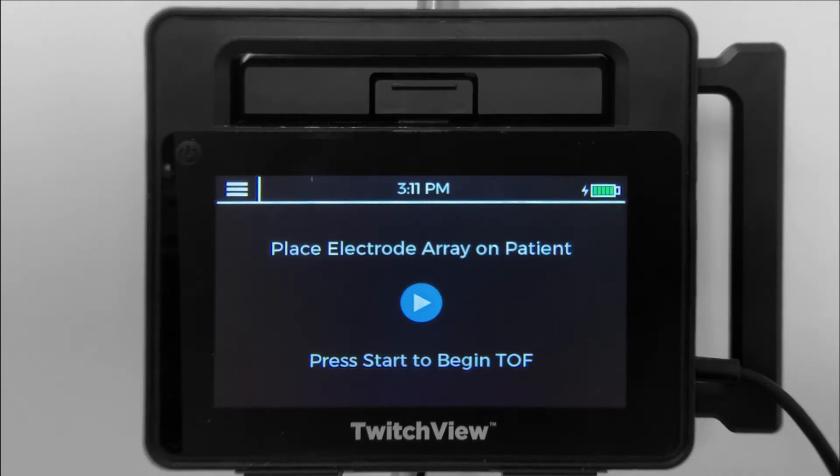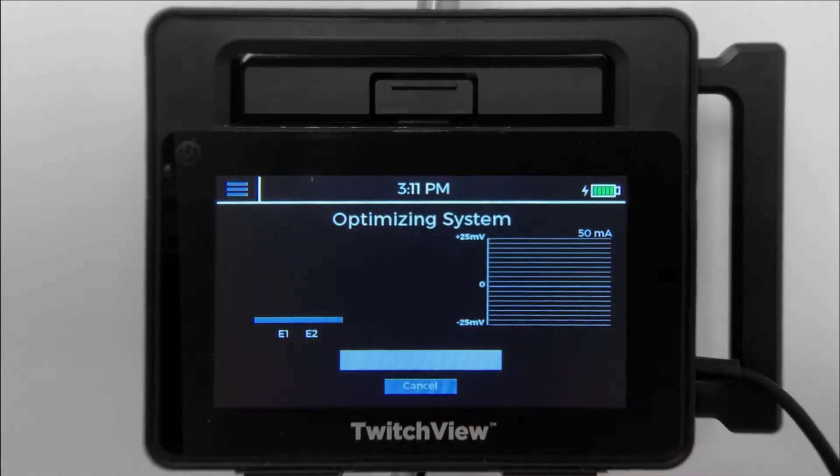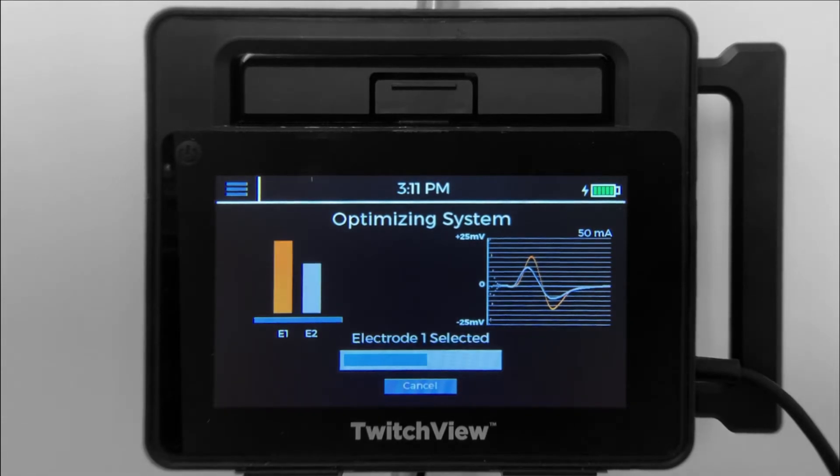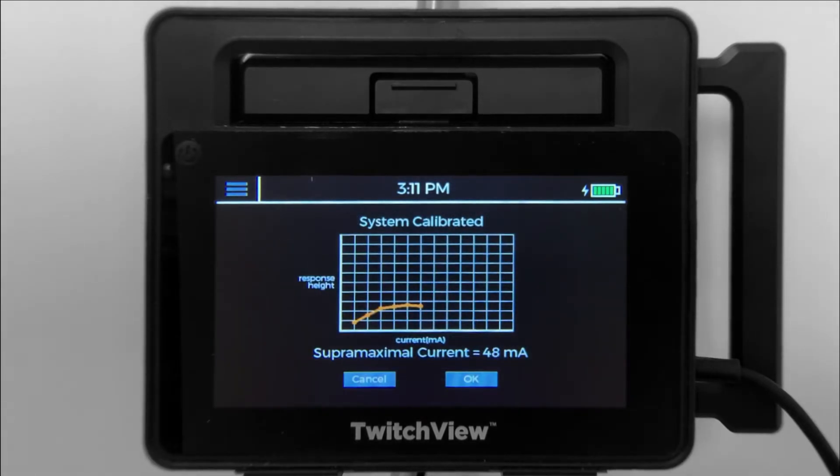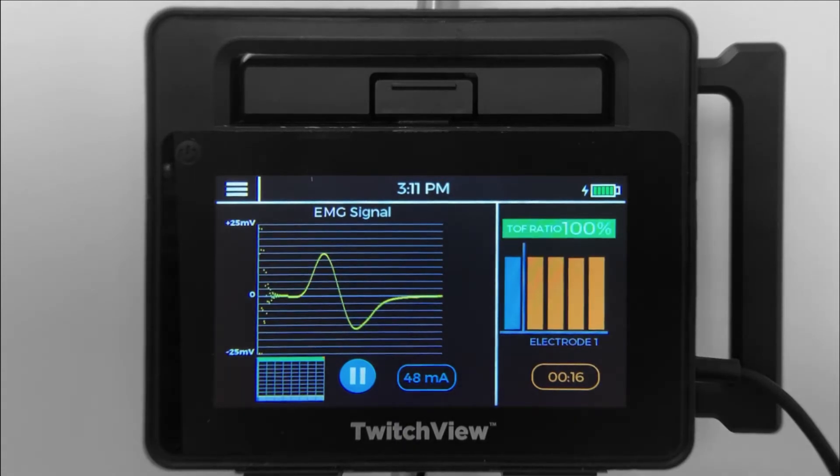After the patient is anesthetized but before administering neuromuscular blocking agent, press play on the TwitchView monitor. The monitor will immediately begin stimulation as it determines which EMG recording electrode provides the best signal, sets the supramaximal current or the optimal stimulating milliamperage, and begins TRAIN-4 monitoring at 20-second intervals.